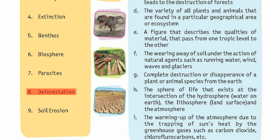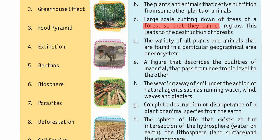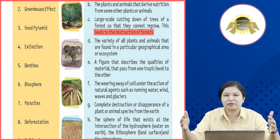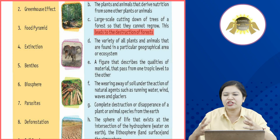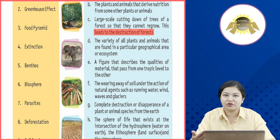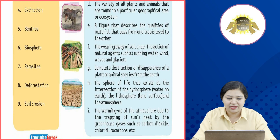8th: Deforestation. Deforestation का मतलब तो आप समझते रहे होंगे — large scale cutting down of trees of a forest so that they cannot regrow, this leads to the destruction of forest. Deforestation का मतलब होता है किसी forest में से सारे trees को इस तरह cut कर देना कि दुबारा वहाँ पर regrow न हो सके। तो उसे हम deforestation कहते हैं।